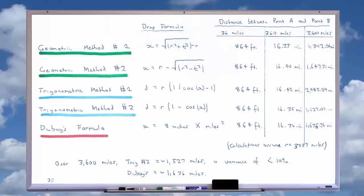In part 4 of this series we will see that although Dubay's formula is a very accurate approximation of the drop of the earth from a tangent line intersecting the earth at the point of the observer, it is not appropriate for the kinds of flat earth experiments which some people are using it for.